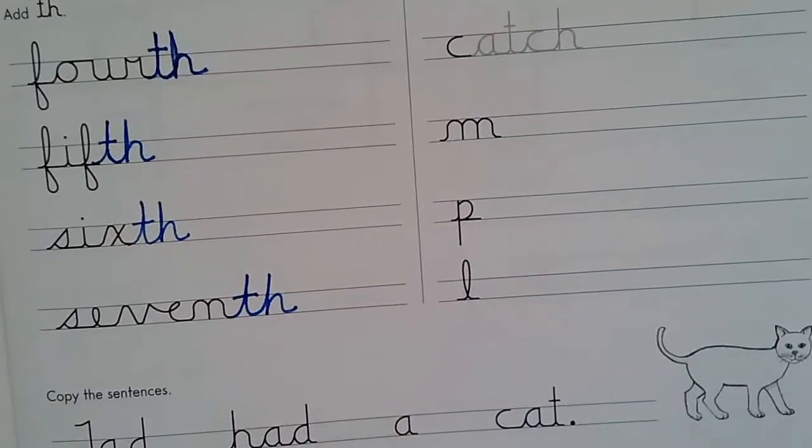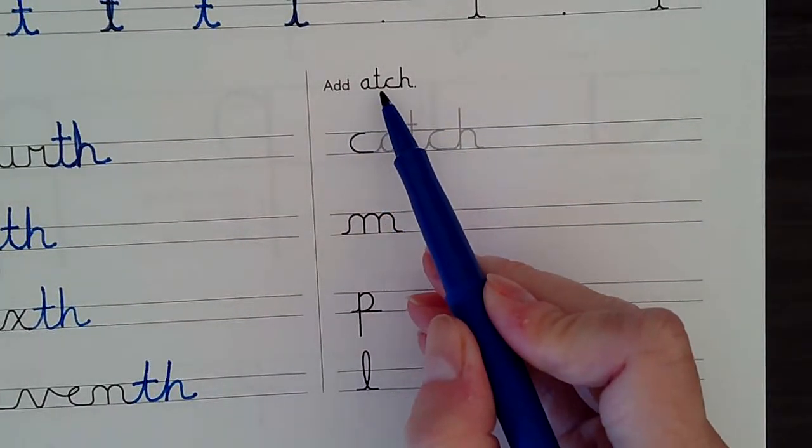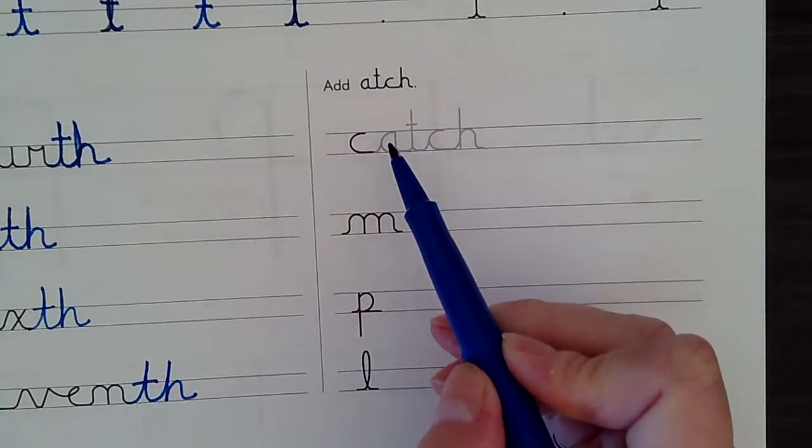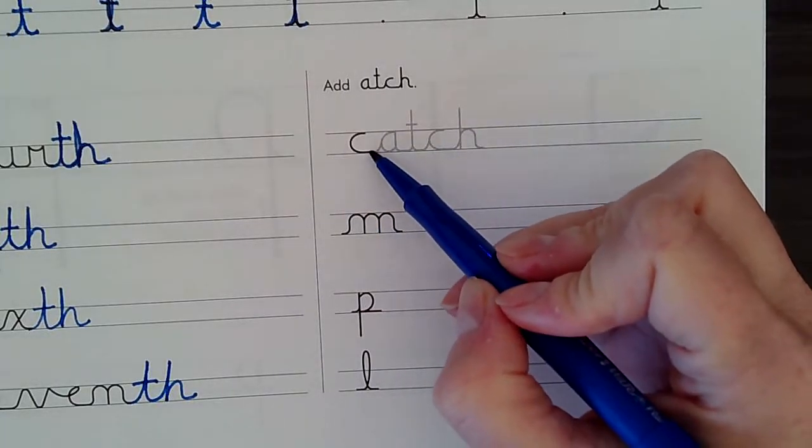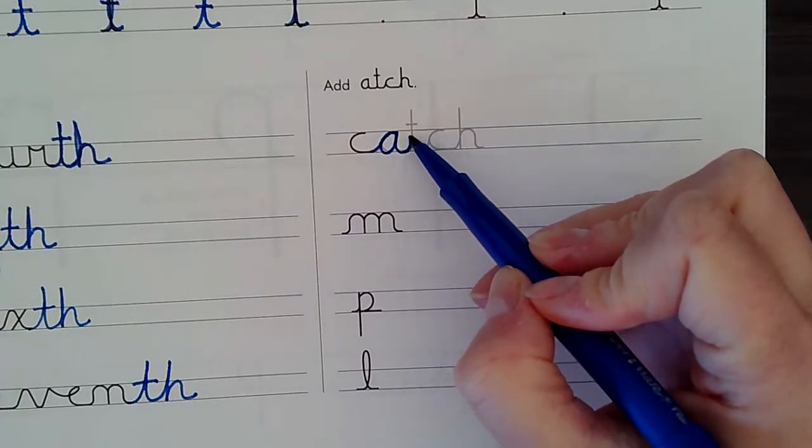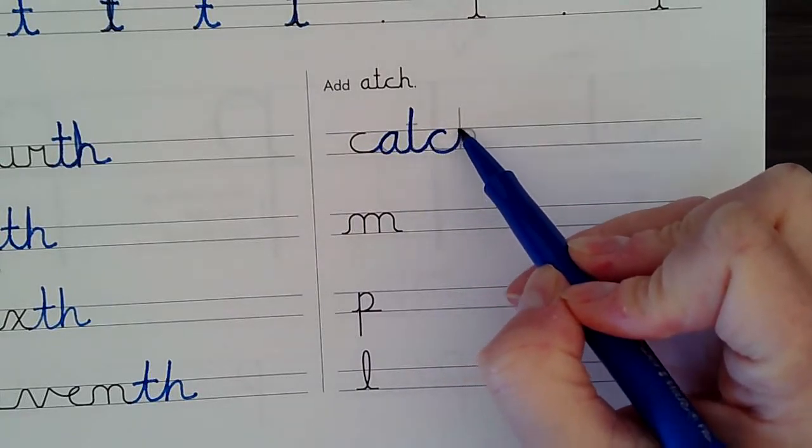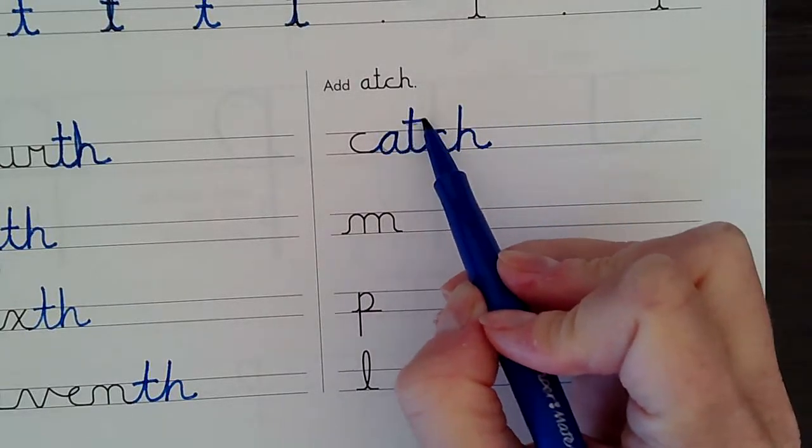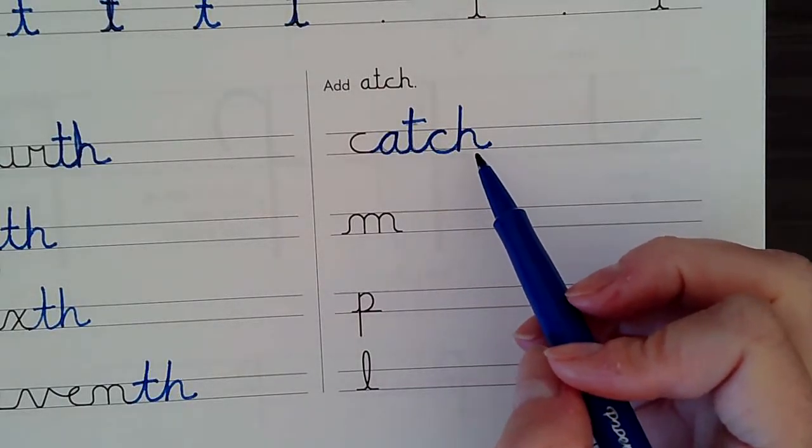And then on the other side it asks me to add ATCH. I'm adding four letters to make some words. So I already have a C here, so I need to add A, T, C, and H. And when I'm done I go back and I cross my T. And now it says catch. I can catch a ball.